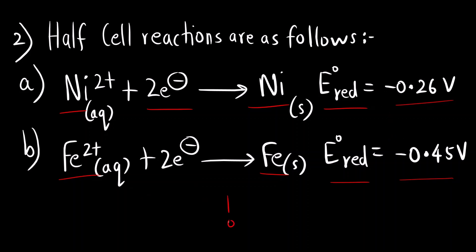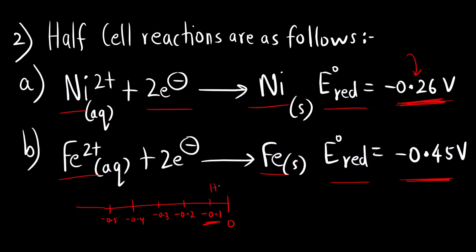Now you have to be very careful. Consider the number line at 0 — you can see both values are negative. So on the number line: minus 0.1, minus 0.2, minus 0.3, minus 0.4, minus 0.5, and so on. The lower negative value is the higher one. For example, minus 0.1 is greater than minus 0.2. So comparing these two values, minus 0.26 is greater than minus 0.45.